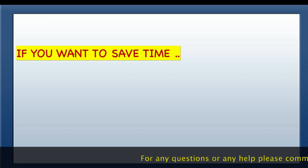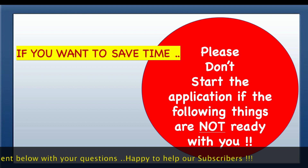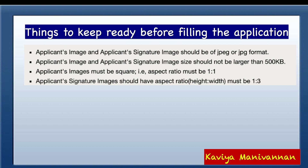Here is one of the most important tips: if you want to save time, please don't start the application if the following things are not ready. Applicant's image and applicant's signature image should be in JPEG or JPG format. The image size should not be larger than 500 KB. Applicant's image should have an aspect ratio of 1 to 1, and the signature image should have a height-to-width ratio of 1 to 3.